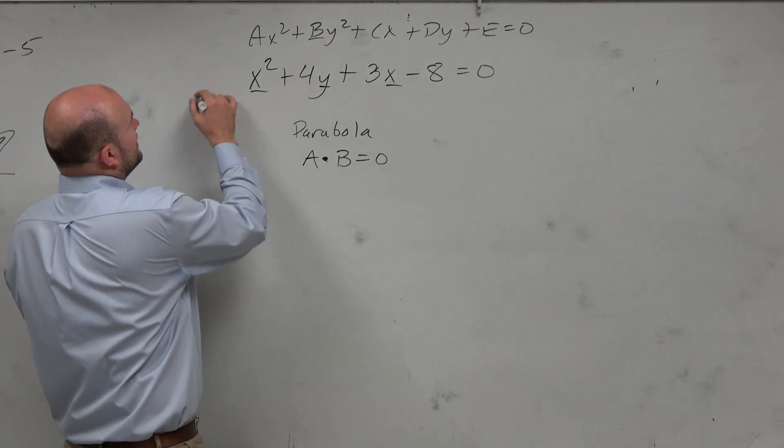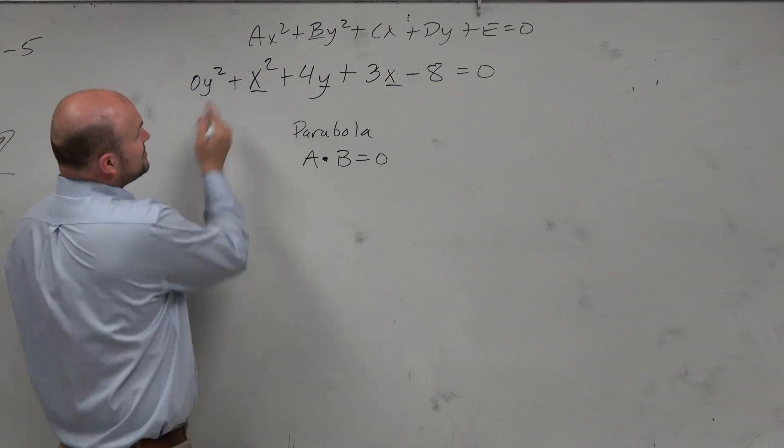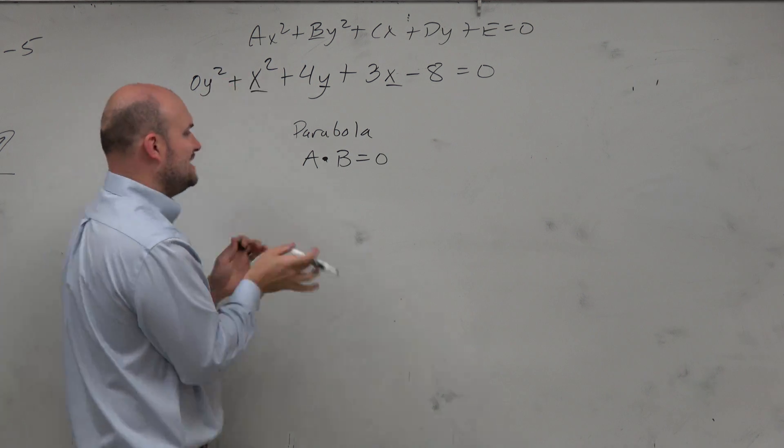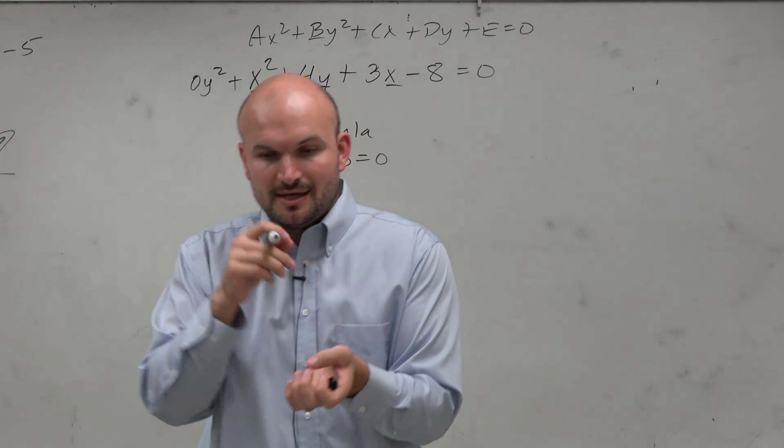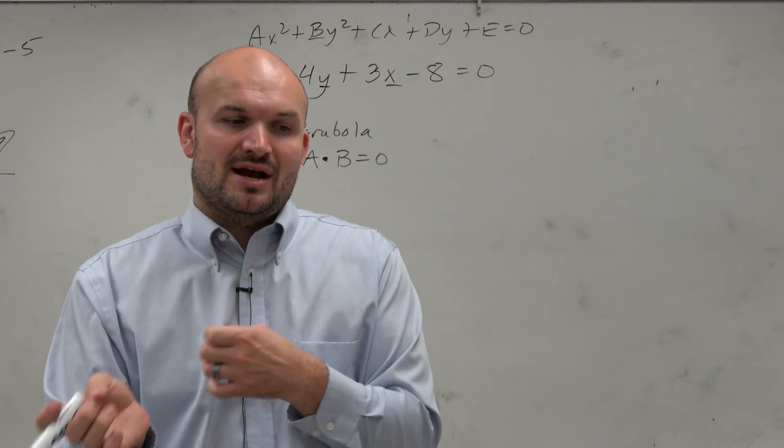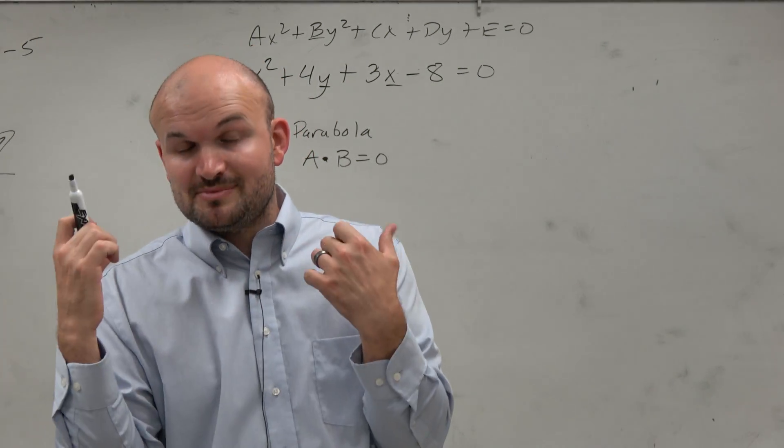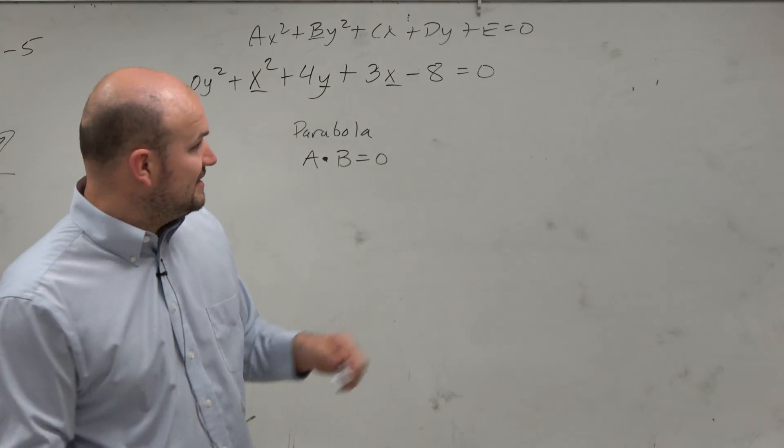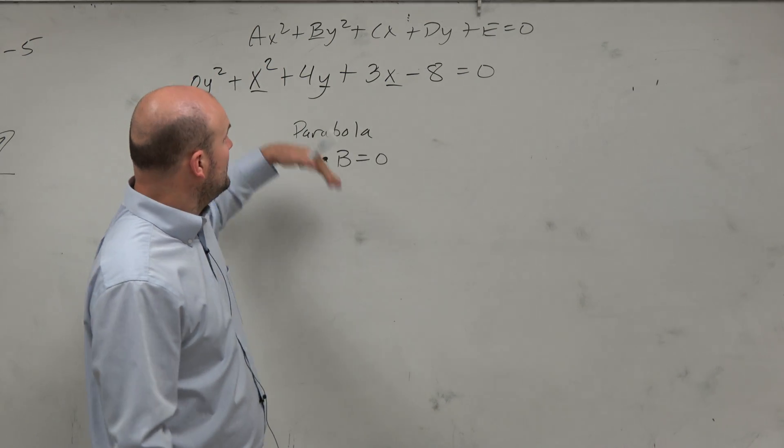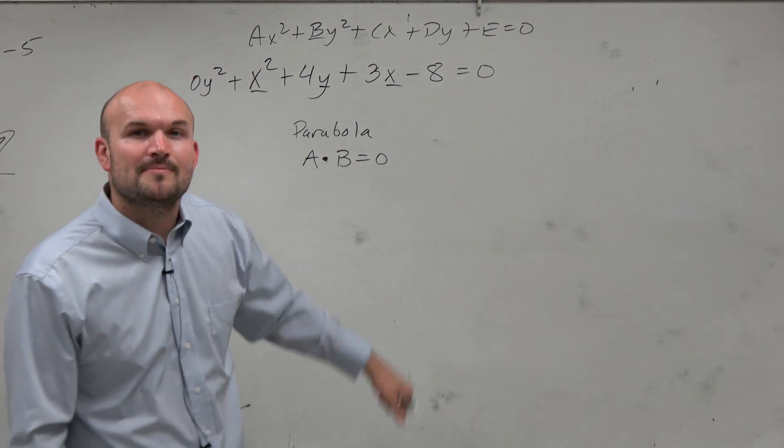We could even say it looked like this, 0y squared plus x squared. So it is there, it's just b is equal to 0. Anytime your coefficients for x squared or y squared is going to be 0, meaning it's a non-existent term that's been shown, therefore you can justify it being a parabola. So there's the classification, which is easy, and then a little bit of justification to show. Thanks.